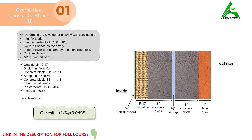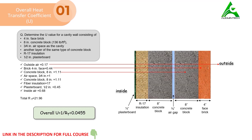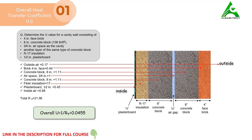The resistance values found for each component are: outside air = 0.17, 4-inch face brick = 0.44, concrete block = 1.11, air space = 1.00, second concrete block = 1.11, insulation = 17, plasterboard = 0.45, and inside air = 0.68. Now that we know how to calculate the overall heat transfer coefficient, this lecture is over. Thank you and see you again in the next one.